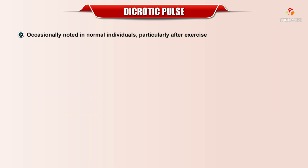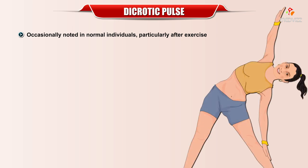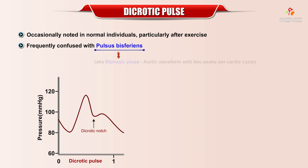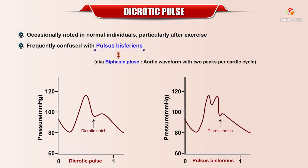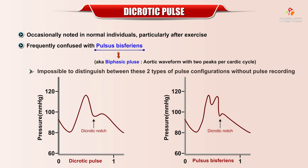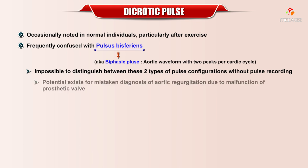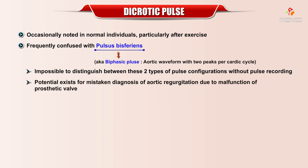Dicrotic pulse is occasionally noted in normal individuals too, particularly after exercise. A dicrotic pulse is frequently confused with pulsus bisferiens at the bedside. It is almost impossible to distinguish between these two types of pulse configurations without a pulse recording. Thus, a potential exists for a mistaken diagnosis of aortic regurgitation due to malfunction of a prosthetic valve.